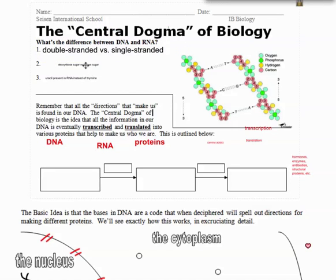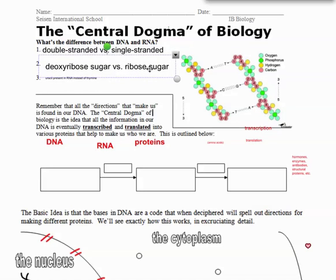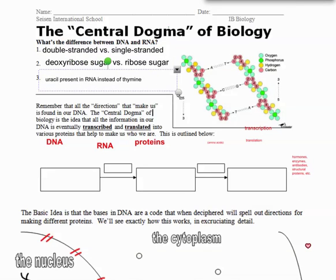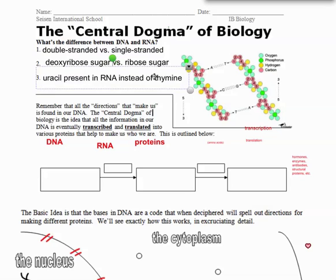Another thing the D helps me remember is that in DNA we have deoxyribose sugar, whereas in RNA it's ribose sugar as part of the nucleotide. And this is very important for understanding the central dogma of biology. In RNA, there is U for uracil instead of T for thymine. So the four bases in DNA are A, T, C, and G, whereas the four bases in RNA are A, U, C, and G.